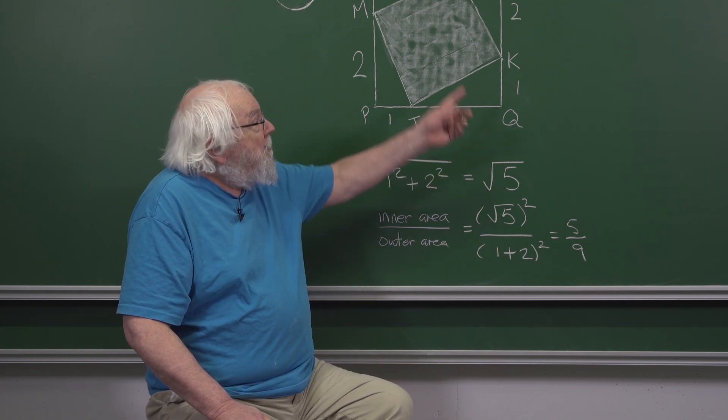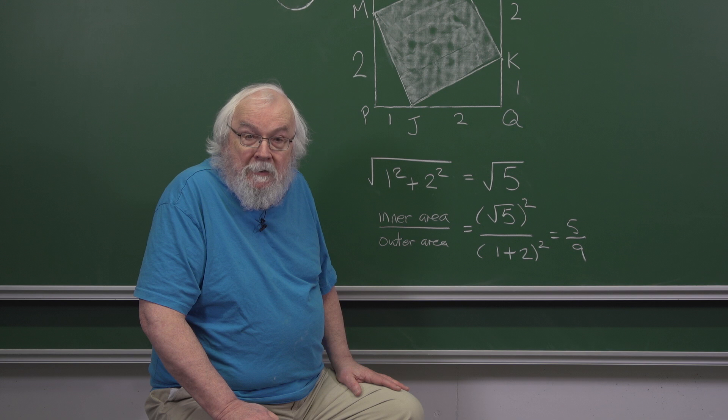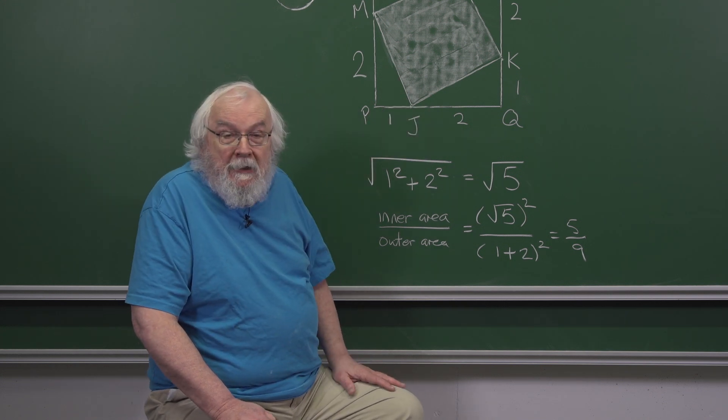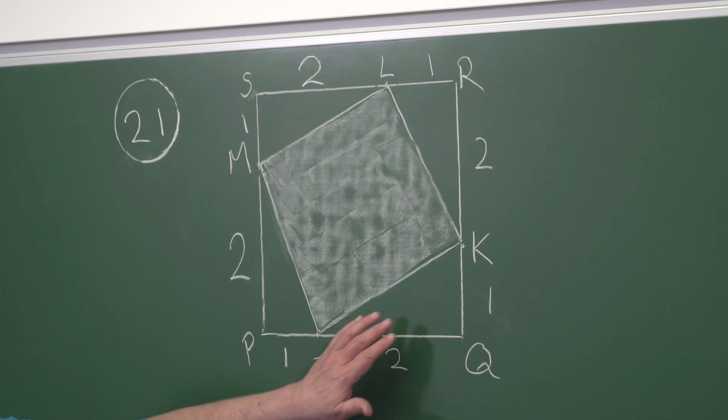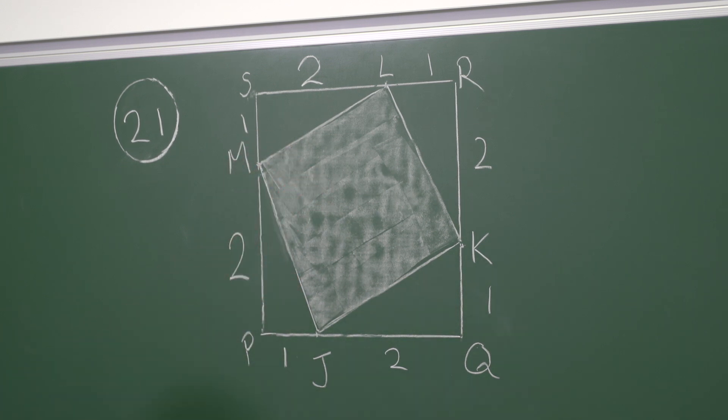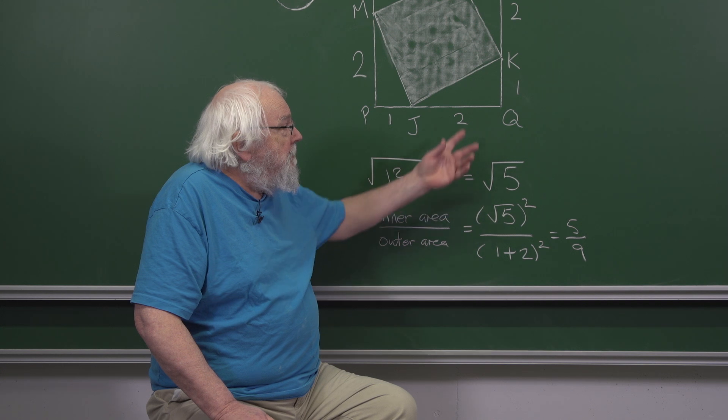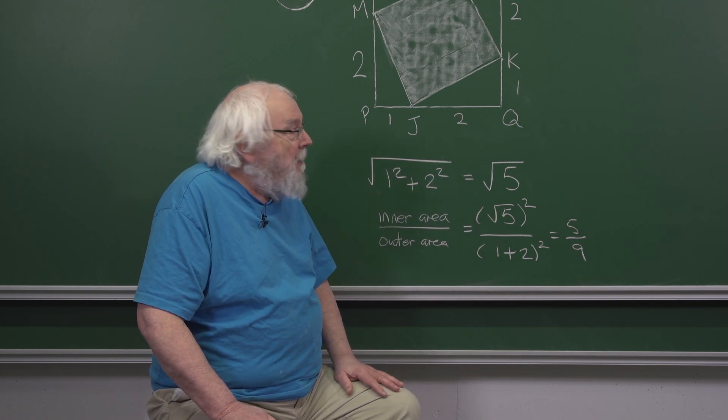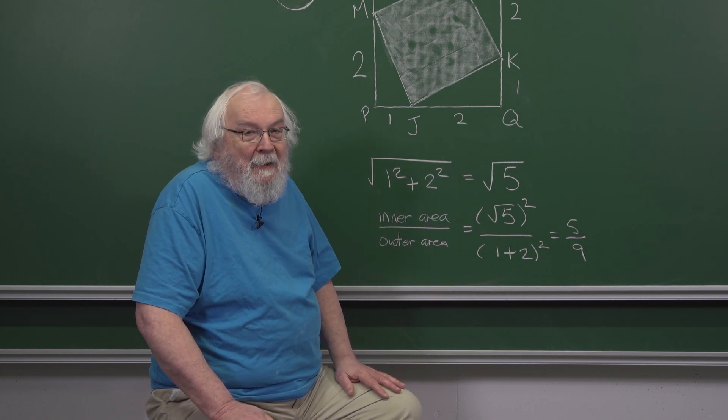The area of the whole square is certainly 3 squared. You can find the area of the shaded square by subtracting away the four areas that are in the corners. And each of those has an area which is not hard to work out. You just use half base times height.